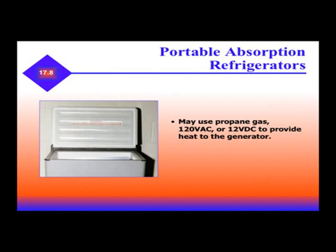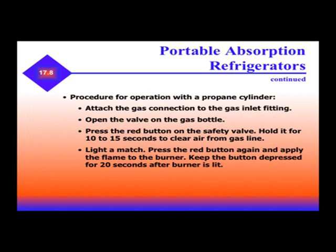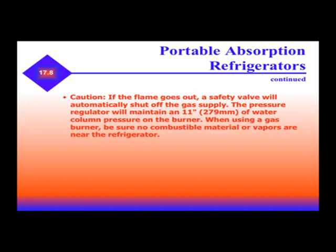Portable absorption refrigerators may use propane gas, 120-volt AC, or 12-volt DC to provide heat to the generator. The pull-down time is 2 to 6 hours depending on ambient temperature. A small propane cylinder provides approximately 70 hours of continuous operation. To operate a propane system: attach the gas connection to the gas inlet fitting, open the valve on the gas bottle, press the red button on the safety valve and hold it for 10 to 15 seconds to clear air from the gas line, light a match, press the red button again and apply the flame to the burner, and keep the button depressed for 20 seconds after the burner is lit. If the flame goes out, the safety valve will automatically shut off the gas supply.